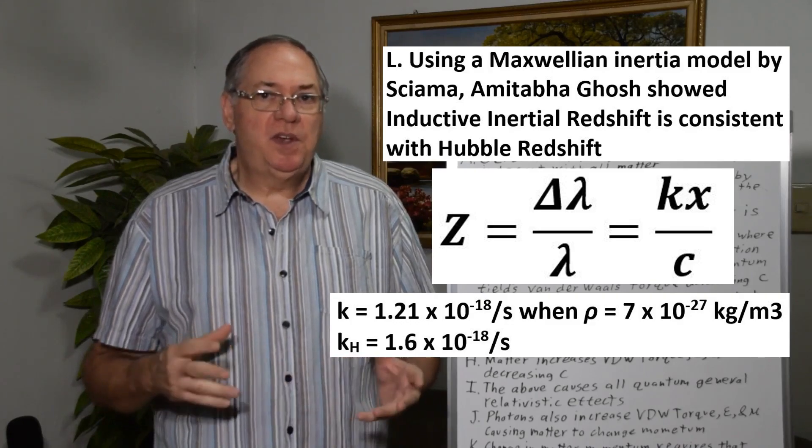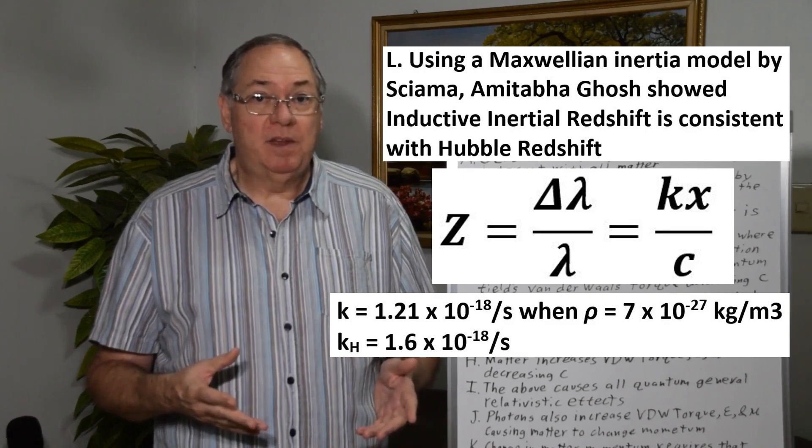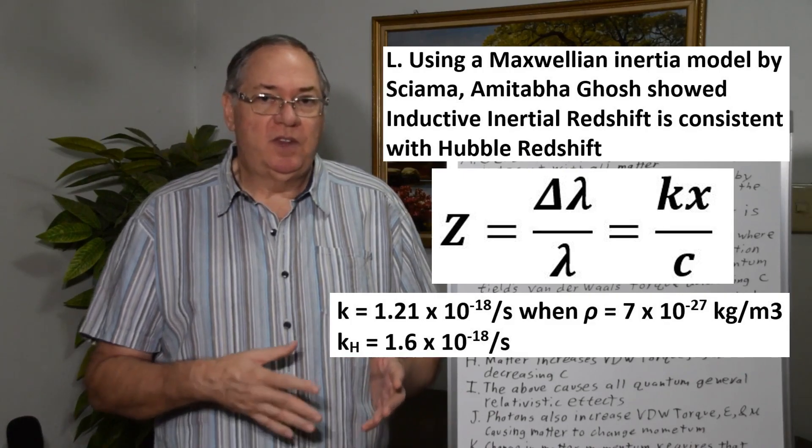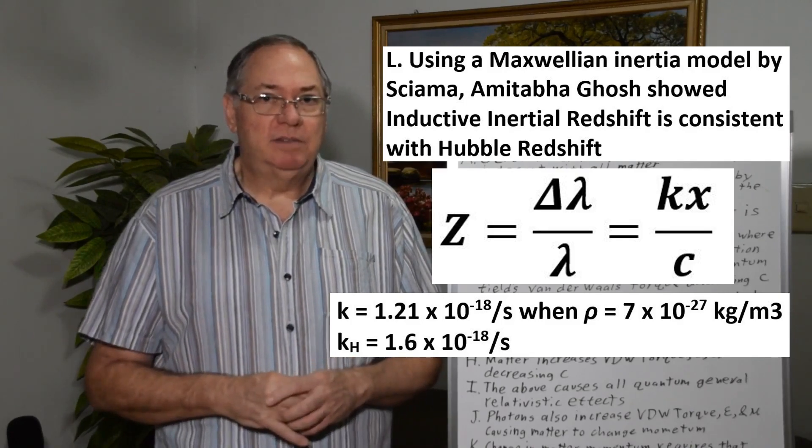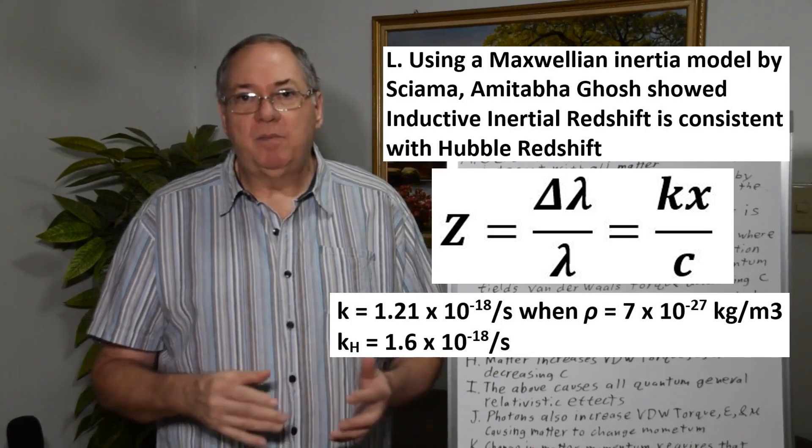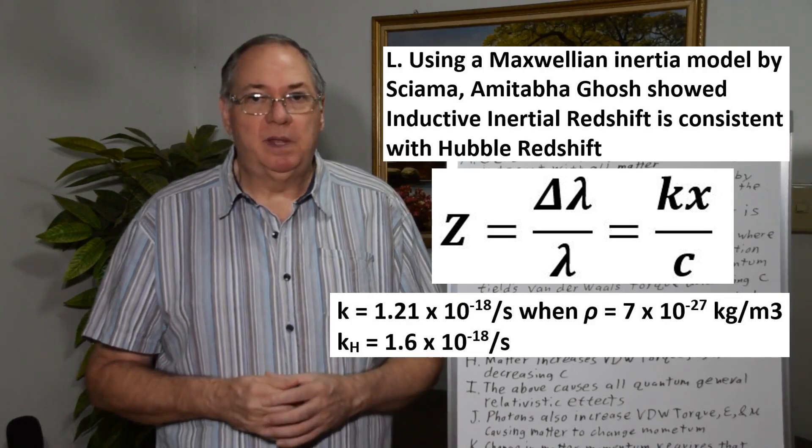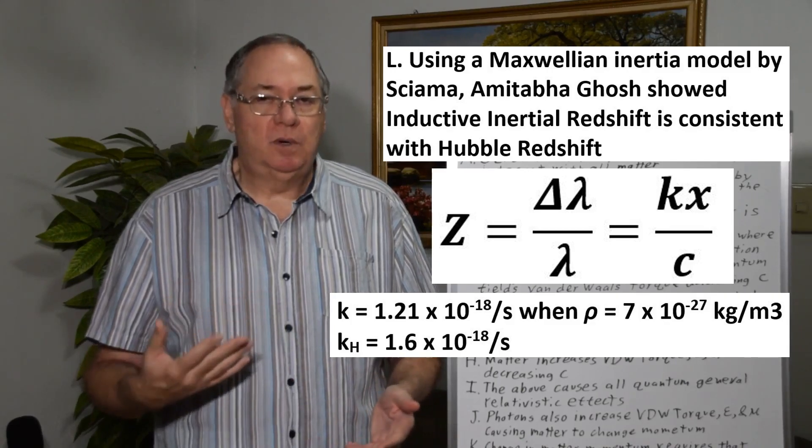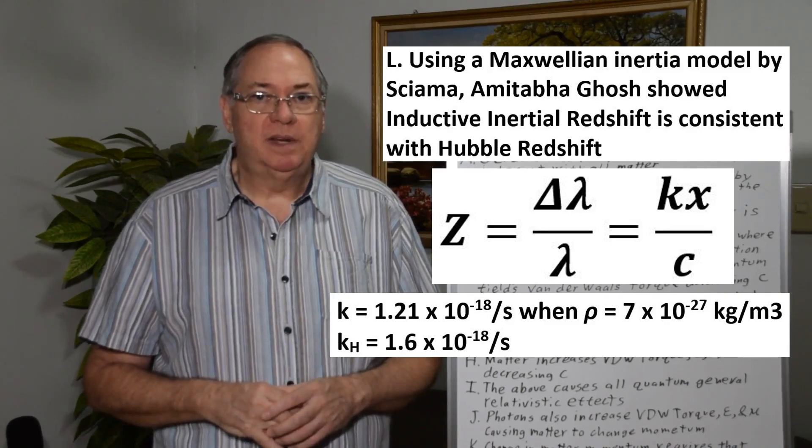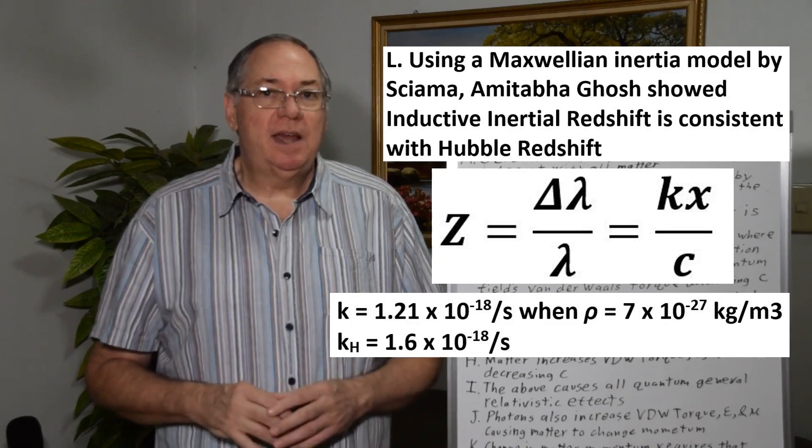So this shows that using a simplified approximation of the Hubble redshift, using inductive inertial redshift model, you end up with the correct amount of redshift to explain Hubble redshift. And it's linear, which conforms with the experimental observations so far. So this is what I think is happening.